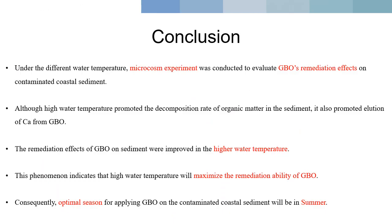In conclusion, a microcosm experiment under different water temperatures was conducted to evaluate GBO's remediation effects on contaminated coastal sediment. Although high water temperature promoted organic matter decomposition, it also promoted calcium elution from GBO, improving GBO's remediation effects at higher temperatures. This indicates that high water temperature maximizes GBO's remediation ability, and the optimal season for applying GBO on contaminated coastal sediment is summer. Thank you for your attention.